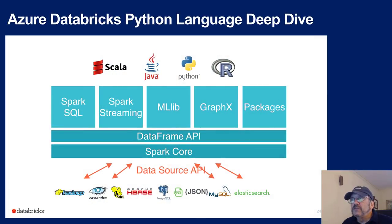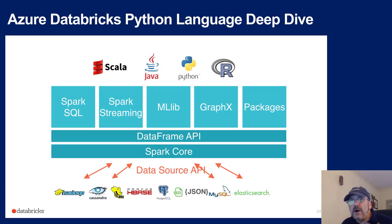Looking at Spark's architecture: you've got the Spark core that can read many different sources — Azure and open source — and above that is the DataFrame API, which is relatively new and wasn't part of the original Spark project. When using Python or R, you can use a native DataFrame look and feel, and that's now supported within Spark.